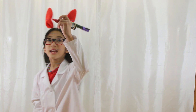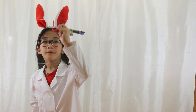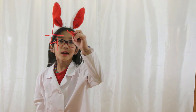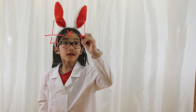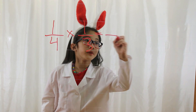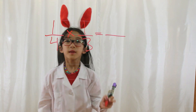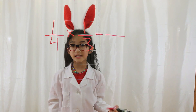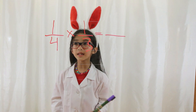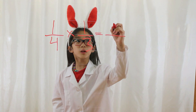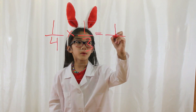Let's say you have one fourth times one third equals blank. First, you take the numerators and you multiply them together. One times one is one, so one is our numerator.